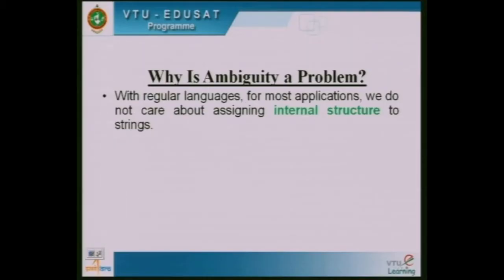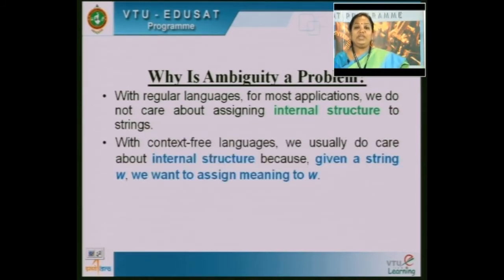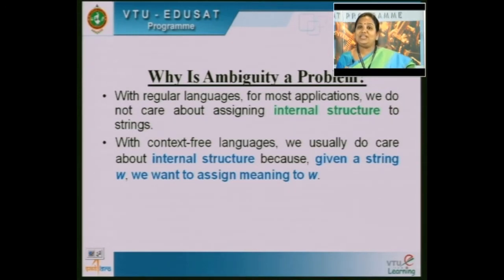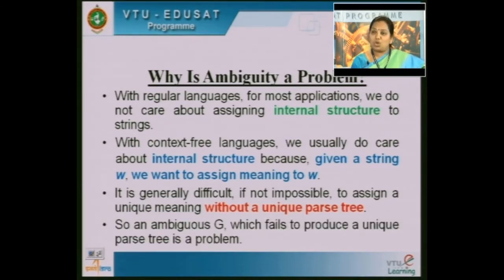Why is ambiguity a problem? With regular languages, for most applications we do not care about assigning internal structure to strings. Whereas with context-free languages, we usually do care about internal structure because given a string W, we want to assign meaning to W. It is generally difficult, if not impossible, to assign a unique meaning without a unique parse tree. An ambiguous grammar which fails to produce a unique parse tree is therefore a problem.